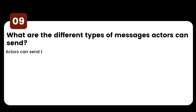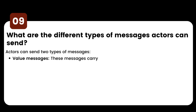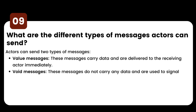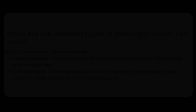What are the different types of messages actors can send? Actors can send two types of messages. Value messages: these messages carry data and are delivered to the receiving actor immediately. Void messages: these messages do not carry any data and are used to signal an event and trigger an action within the receiving actor.